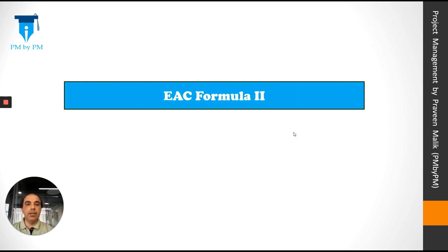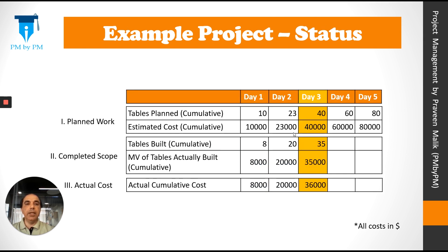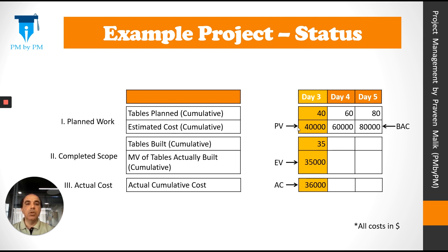Let's look at another EAC formula using our example project. Our plan was to build 80 tables in 5 days with an estimate of $1,000 per table, so the total project budget or BAC was $80,000. On day 3, we had to complete 40 tables but actually completed only 35 tables, and the cost of building those tables was $36,000. So PV was $40,000, EV was $35,000, AC was $36,000, and BAC was $80,000.